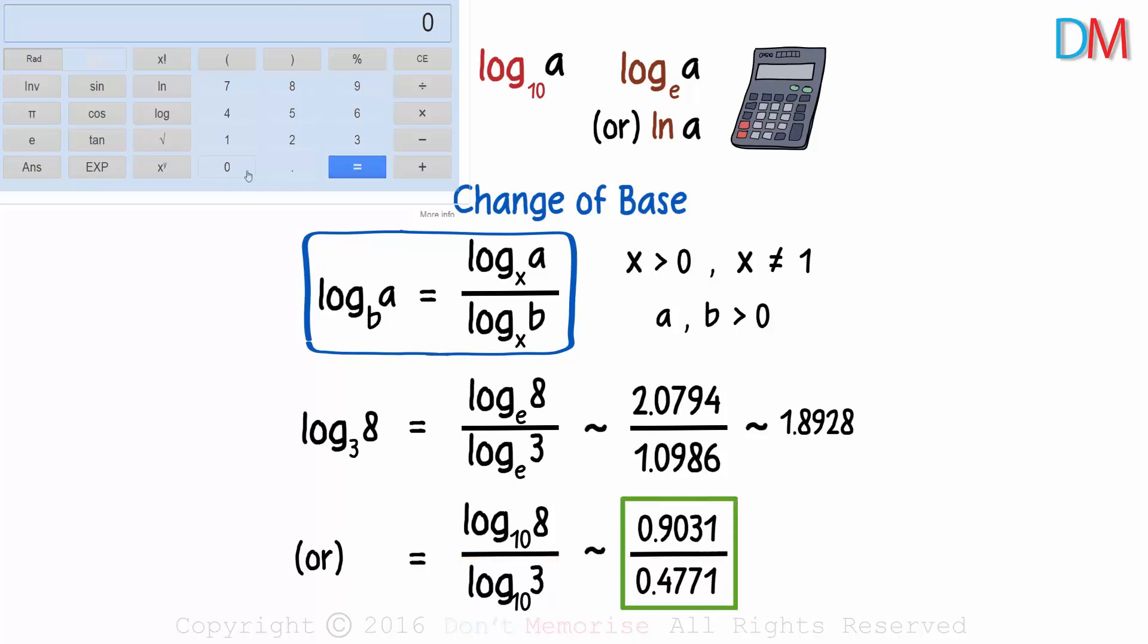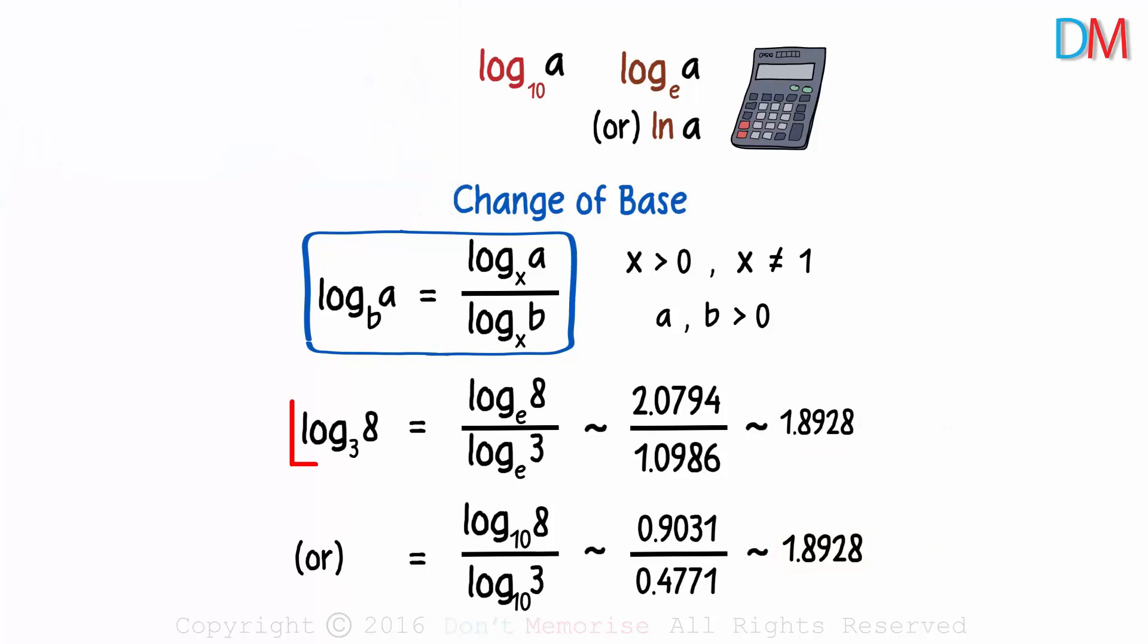What do you think this value should be equal to? 0.9031 divided by 0.4771 gives us 1.8928 approximately. It's the same value and it has to be the same value.